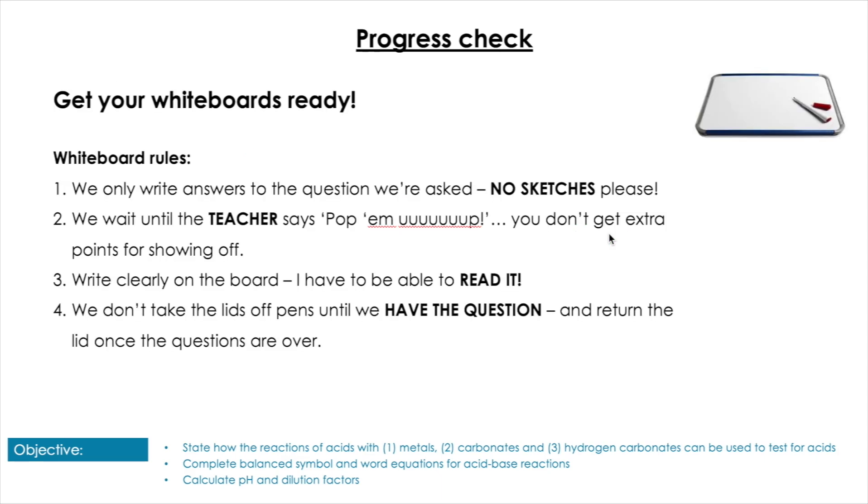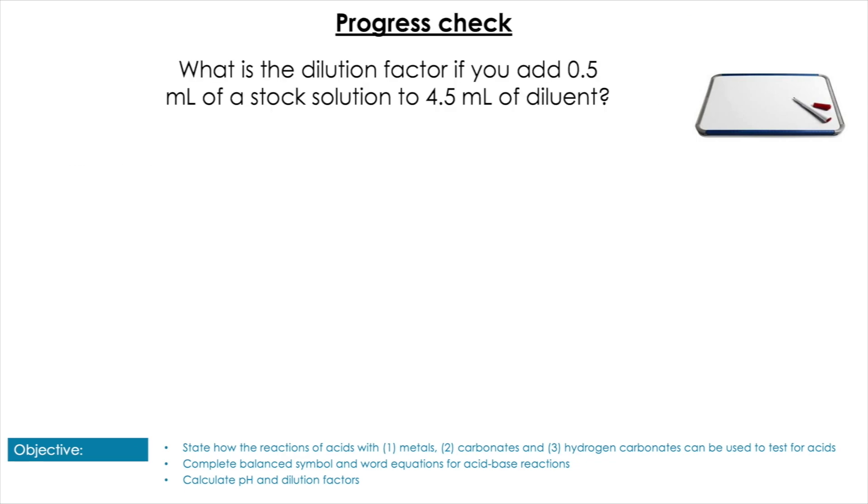Okay, let's get you trying that then. Here's your first question: work out the dilution factor here. Pause the video now, give yourself some time for this. Pop them up, okay, brilliant. Here, well, your initial is 0.5, so we're going to do 0.5 over 0.5 plus 4.5, which is 0.5 over 5, which equals 1 over 10, so we've got a 1 to 10 dilution factor.